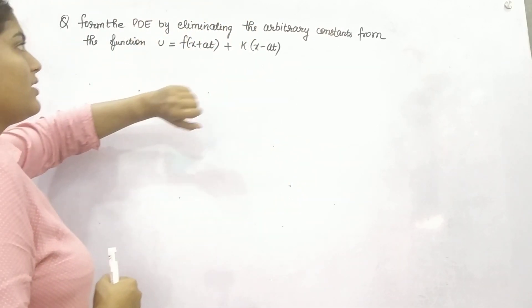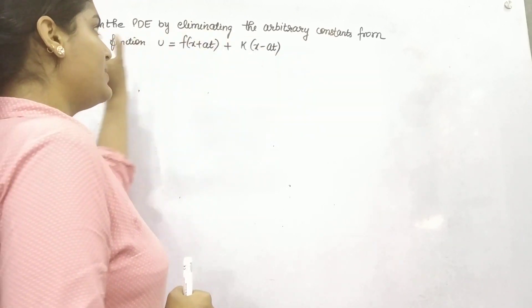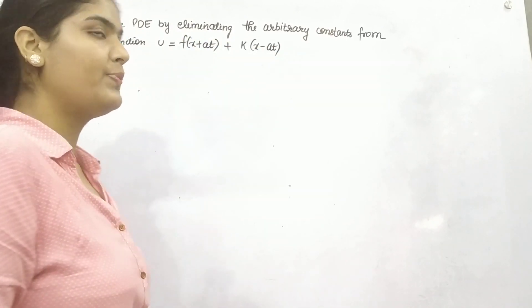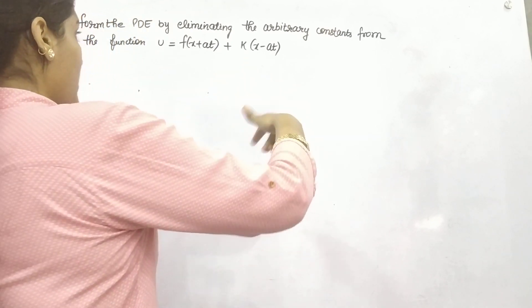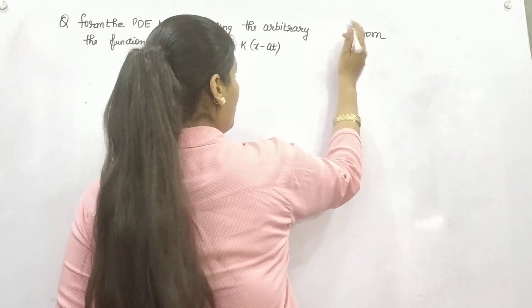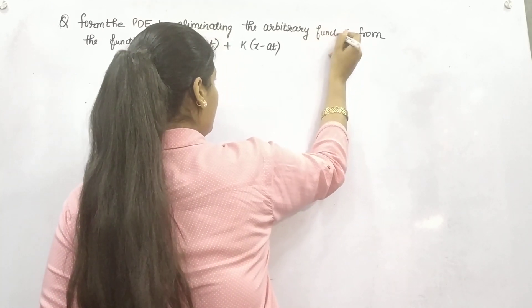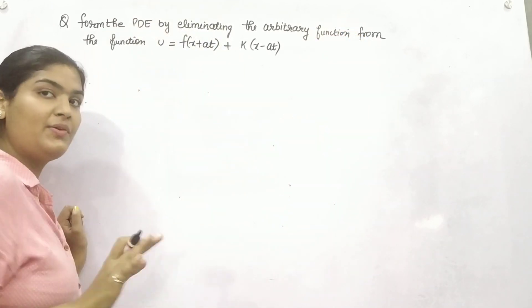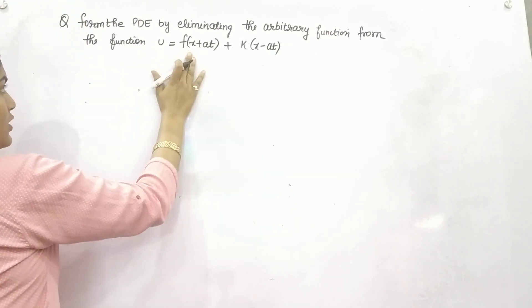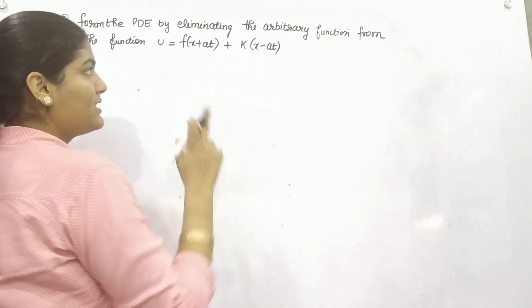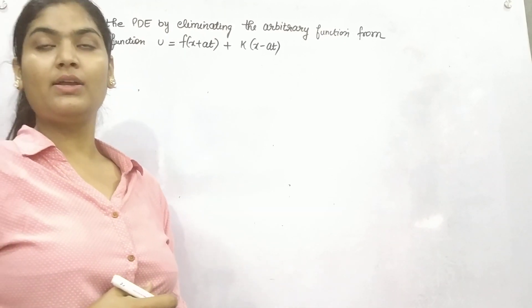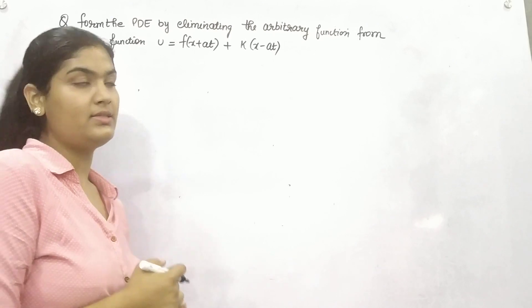Form the partial differential equation by eliminating the arbitrary functions, because the function is given to you in this form. So you have to remove your function. Arbitrary constants we have done so far, but now what you can do? You can see there are two variables x and t, so partially differentiate the function with respect to x and t.